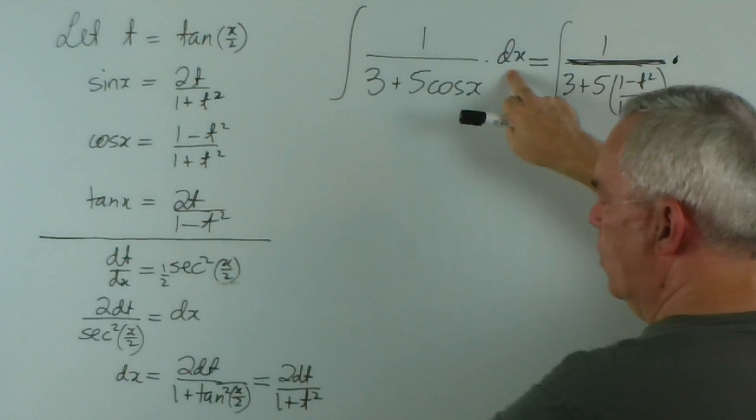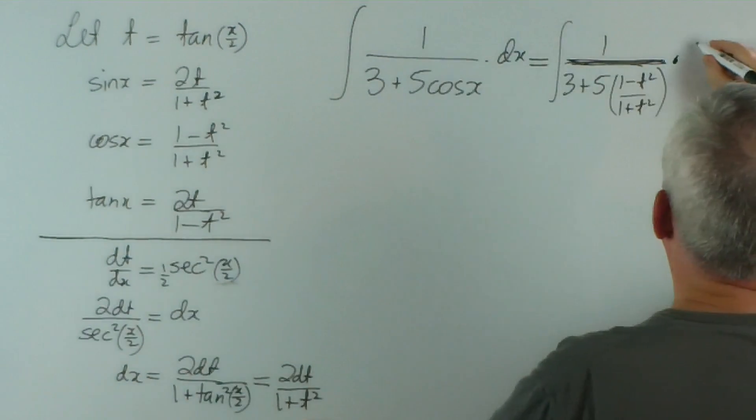Times dx, and we've worked out what dx is. It's 2 dt over (1 + t²).